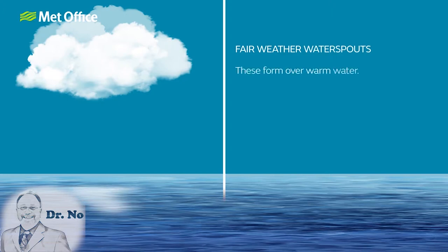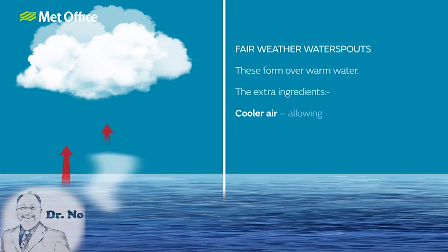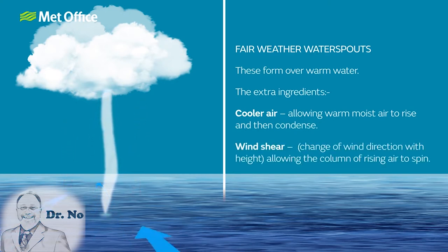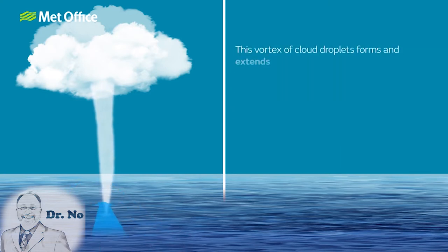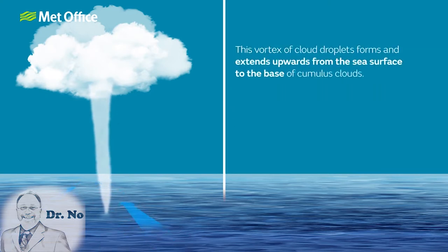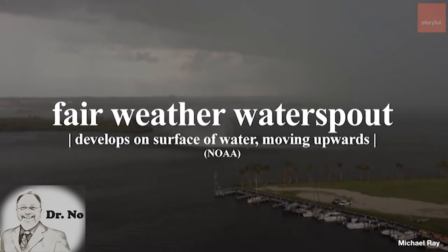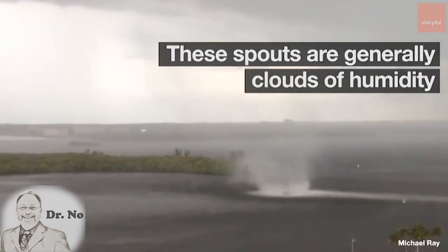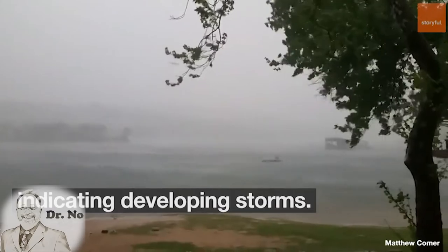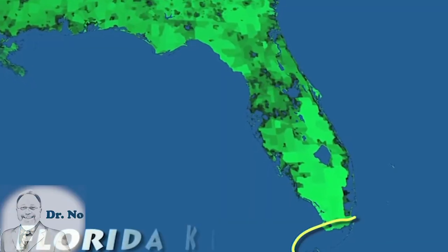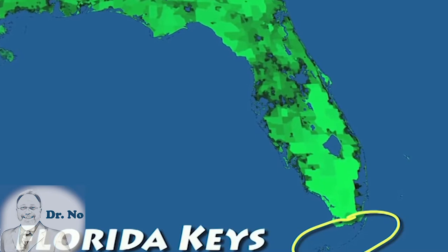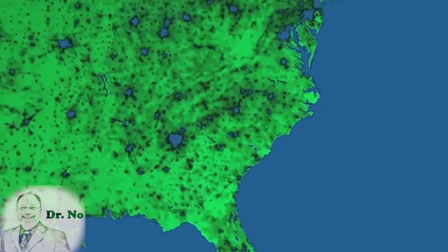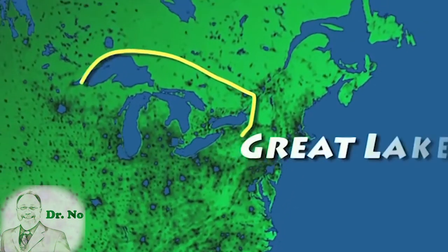Fair-weather waterspouts, however, are much more common and rarely dangerous. The clouds from which they descend are not fast-moving, so fair-weather waterspouts are often stationary. They are associated with developing storm systems, but not storms themselves. Both tornadic and fair-weather waterspouts require a high level of humidity and a relatively warmer water temperature compared to the overlaying air. Waterspouts are more common in tropical and subtropical waters, such as the Florida Keys, the islands of Greece, and off the east coast of Australia.